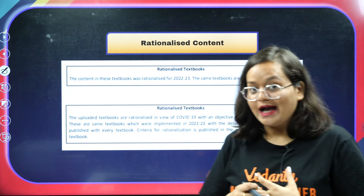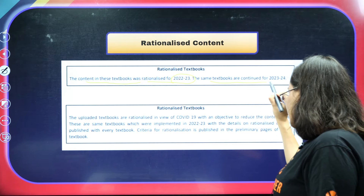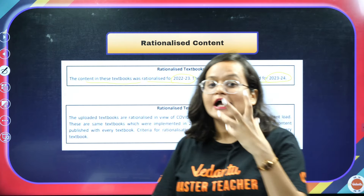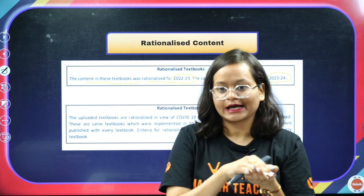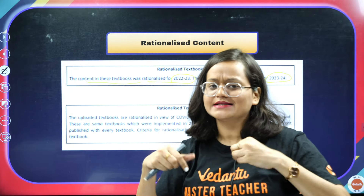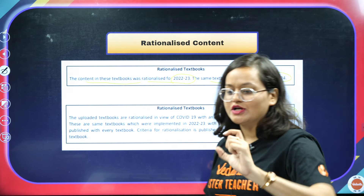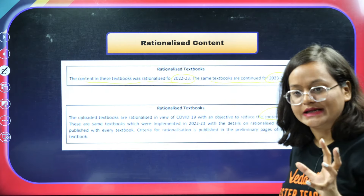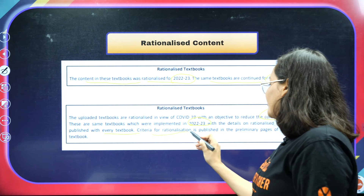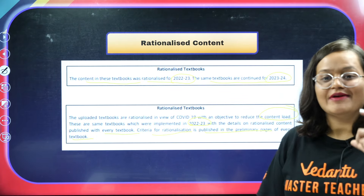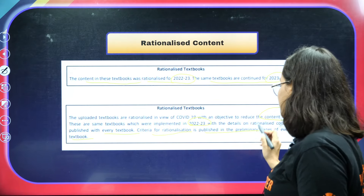Let's start. What is the content that is actually happening? What are the rationalized textbooks? The content in these textbooks was rationalized for 2022-23, and the same textbooks continue for 2023-24. You remember COVID-19 time — because of that, these textbooks were rationalized with an objective to reduce the content load, so some topics were removed. These same textbooks were implemented in 2022-23, and the criteria for rationalization is published on the preliminary pages of every textbook. So your content load is reduced, and that criteria of rationalization is mentioned in the initial pages of your textbook.